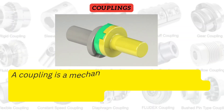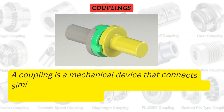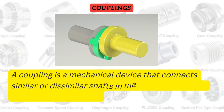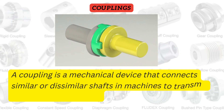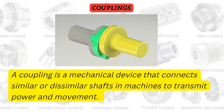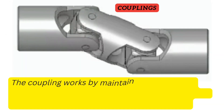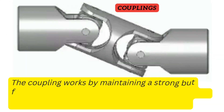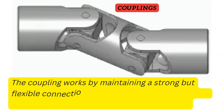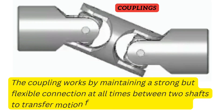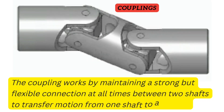Couplings. A coupling is a mechanical device that connects similar or dissimilar shafts in machines to transmit power and movement. The coupling works by maintaining a strong but flexible connection at all times between two shafts to transfer motion from one shaft to another.